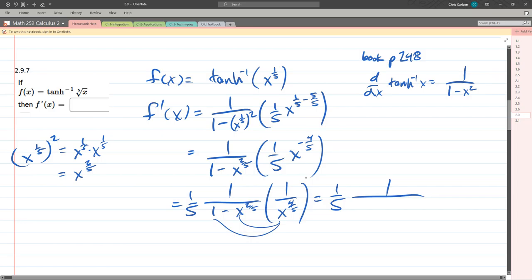But we'll go ahead and distribute this 4/5ths in. So 1 x to the 4/5ths minus 2/5ths plus 4/5ths is 6/5ths.